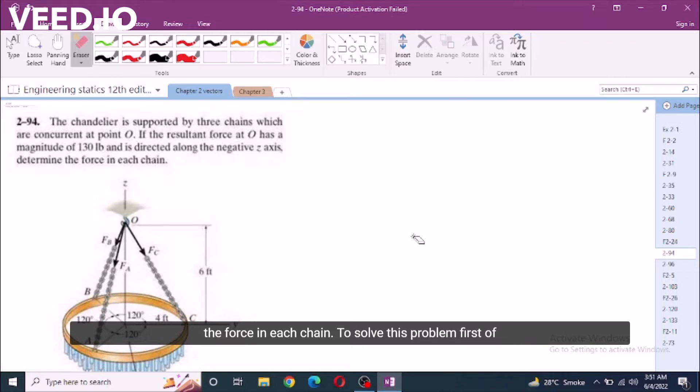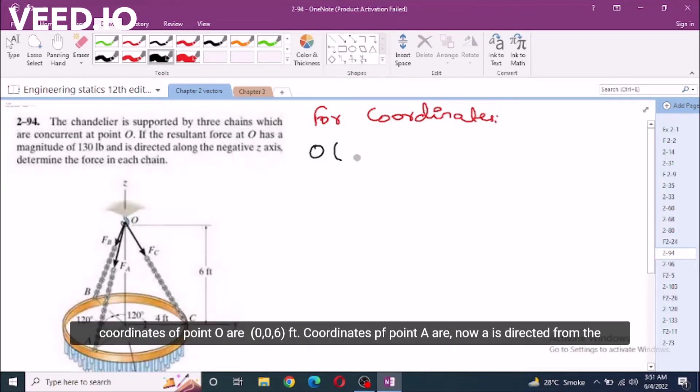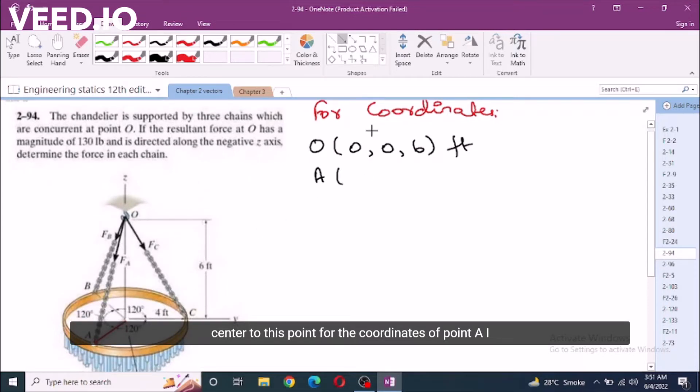To solve this problem, first of all, we have to find the coordinates of each contact point. For coordinates, coordinates of point O are (0, 0, 6) feet. Now, point A is directed from the center to this point. For the coordinates of point A, I have to resolve this vector along Y and X axis because it is just lying on the X-Y plane.